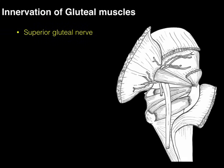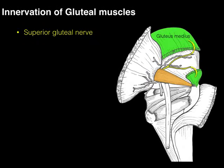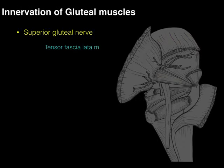On a posterior view of this right hip, with the gluteus maximus reflected away, the superior gluteal nerve comes above the piriformis. It then sends nerve fibers to innervate the gluteus medius, nerve fibers to innervate the gluteus minimus, and a nerve fiber to innervate the TFL.